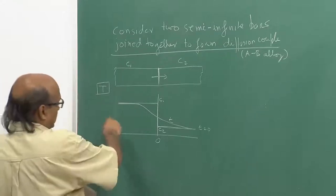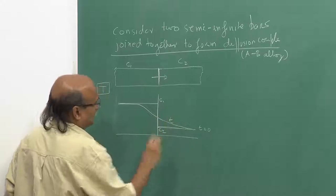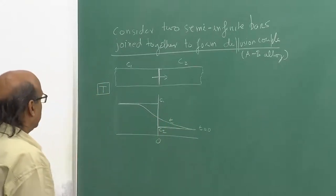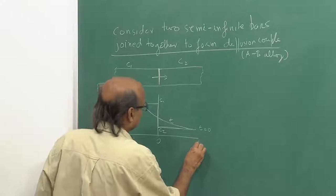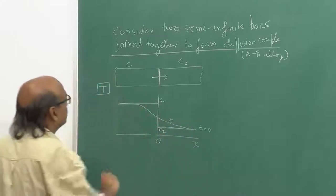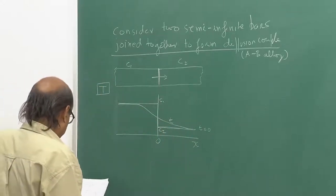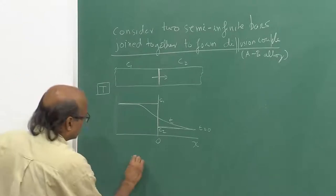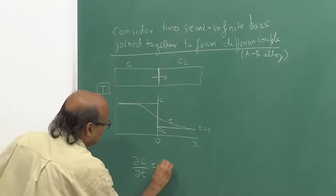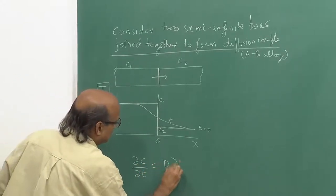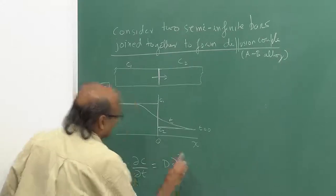If I want to know how this profile is going to change as a function of time as well as of course as a function of distance, I would need a solution to Fick's second law: ∂C/∂t = D · ∂²C/∂x².